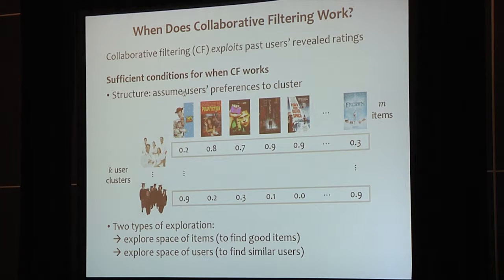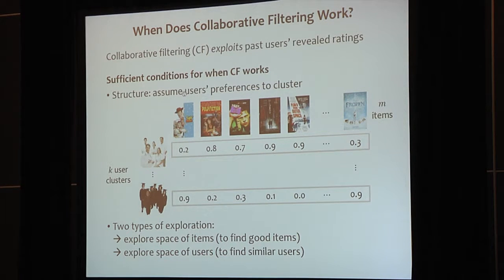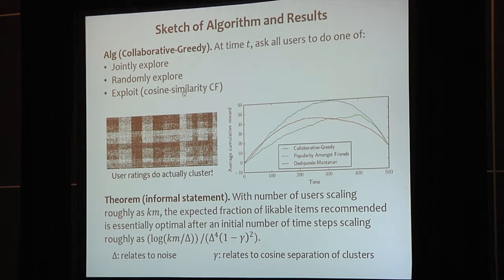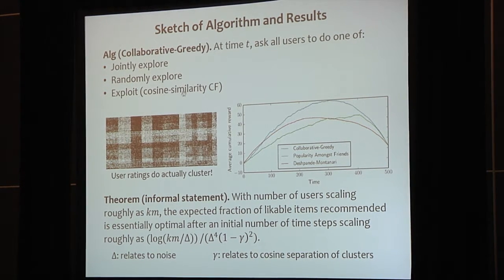We present some sufficient conditions for when collaborative filtering works well. In particular, we assume some structure in which there are groups of users and each group has similar item preferences. We also show that we use two types of exploration: one to explore the space of items and one to explore the space of users. Combining these ideas, we present an algorithm called collaborative greedy, analyze the algorithm's performance under our model, and output a theorem and some plots. Thank you, and I hope to see you at our poster.